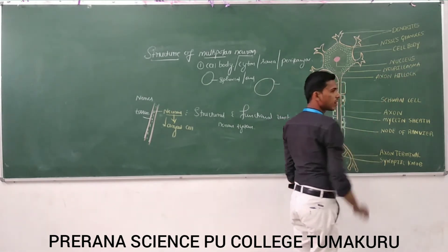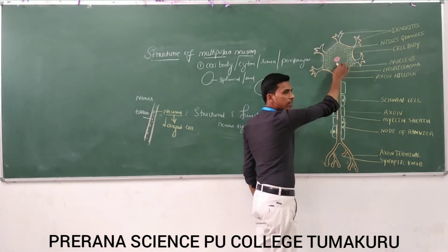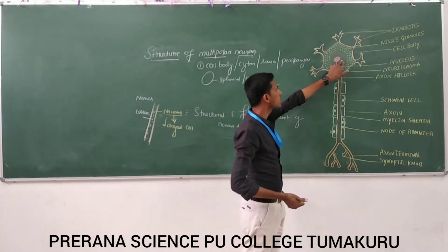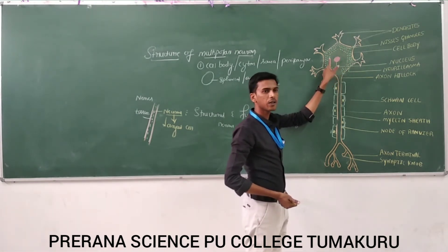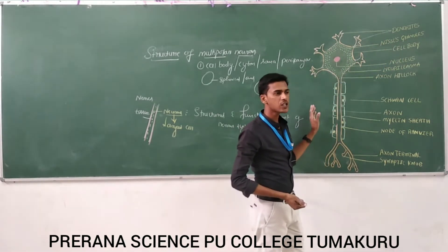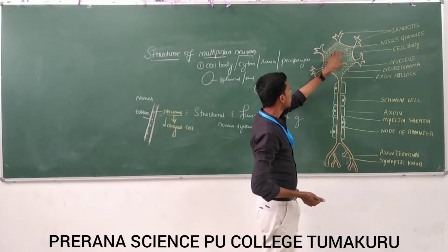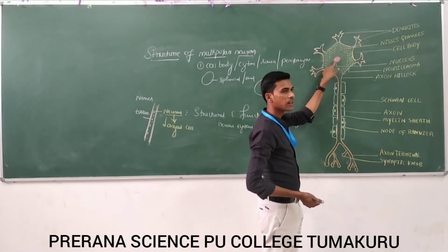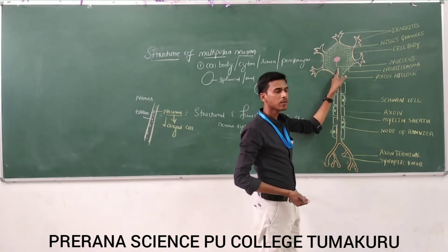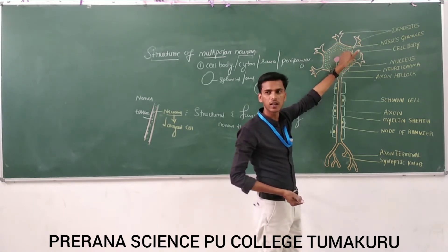Within the neurolemma, this cell body has cytoplasm — that cytoplasm is called neuroplasm. Within this neuroplasm, there are darkly stained granular structures called Nissl granules. These Nissl granules provide energy to the neuron. This cell body has a centrally located nucleus. Here you can also see cell organelles like lysosomes and the Golgi apparatus. So these cell organelles are present in the cell body or the cytoplasm.